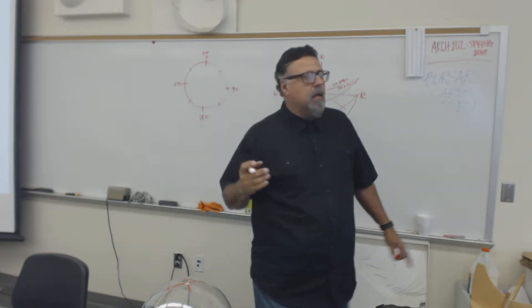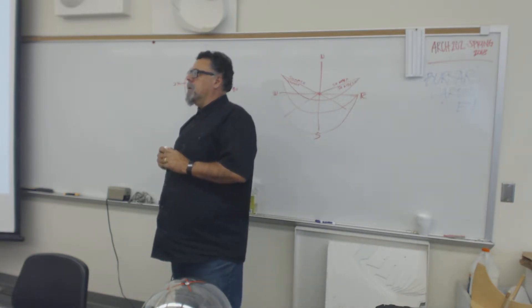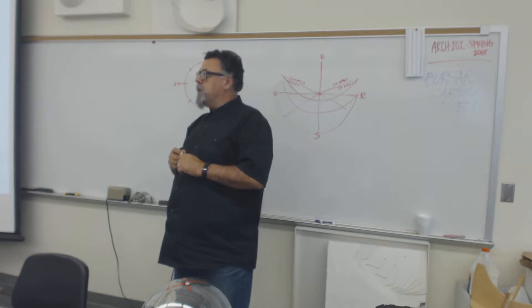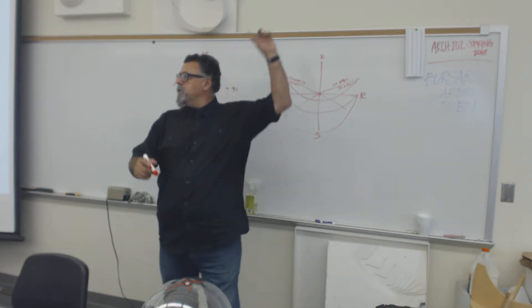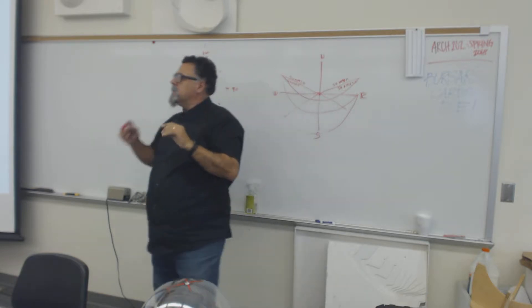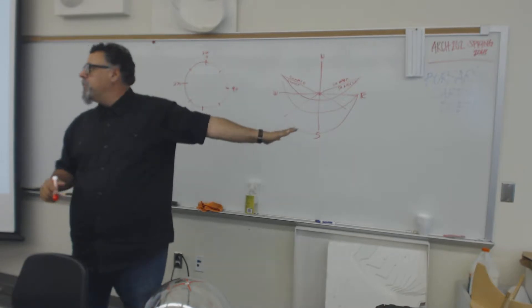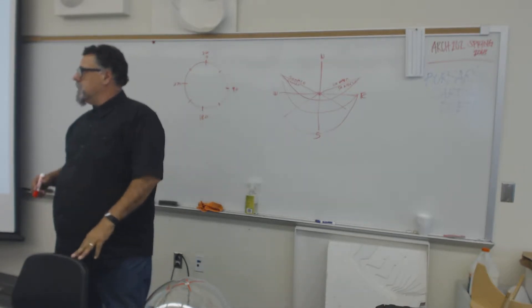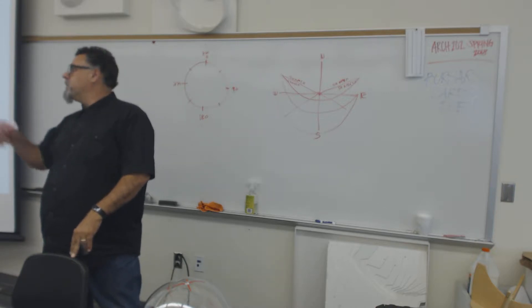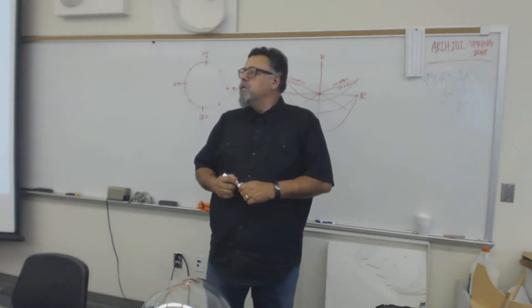One of the things that we need to establish for you guys is a word called azimuth. Azimuth is the position of a celestial body along the ground plane in degrees measured from true north, which we'll have to talk about north and what that means also.